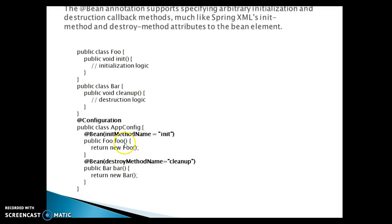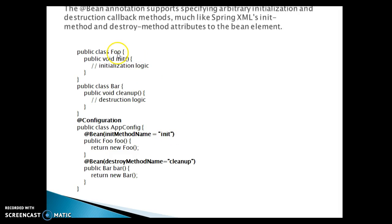We have a method called foo which returns a Foo object - Spring will create an instance of Foo and register it into the Spring container with the method name. If you want a specific name, you can specify the bean name along with @Bean. The @Bean annotation has an attribute called initMethodName where you can specify the init method, so the init method in class Foo will be called automatically.